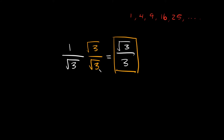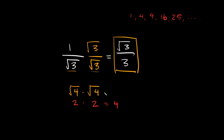Just to clarify what we did in the denominator: the square root of 3 times the square root of 3 is equal to 3. To make sure that's clear, let's use numbers we know. If we take the square root of 4 times the square root of 4 — well, the square root of 4 is 2, so we really just have 2 times 2, which equals 4. That's why root 4 times root 4 equals 4. So root 3 times root 3 is just 3. It works like that with any number — root 69 times root 69 is just 69.